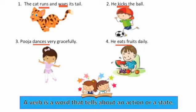Ab samajhne ke liye dekhte hain: a verb is a word that tells about an action or a state. Ab yeh jo action words hoti hain, baccho, inhi ko hum kehte hain verb. Verb jise aap Hindi mein kya kehte hain? Use hum kehte hain 'kriya'. Verb ek aisa shabd hai that tells — jo batata hai kisi action ke baare mein ya phir state ke baare mein. Jaise 'mein khush huun' — kisi paristhiti mein hona. To jo bhi action ya paristhiti ke baare mein batata hai, wo word kehlaata hai verb. Alright, got it?